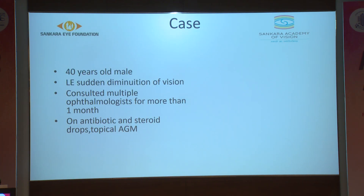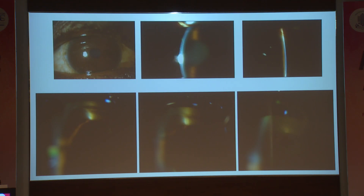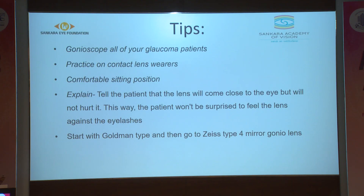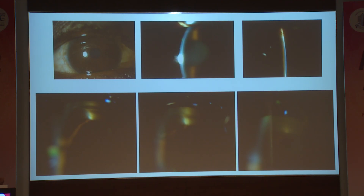A clinical case: a 40-year-old male complained of left eye sudden diminution of vision, had consulted multiple ophthalmologists for more than a month, and was on topical antibiotics, steroid drops, and topical anti-glaucoma medication. Right eye showed a shallow anterior segment; left eye showed a hazy cornea. Van Herrick was grade zero. There was a query of plateau iris in the right eye. However, the diagnosis was completely missed because gonioscopy was not done and no PI was attempted.